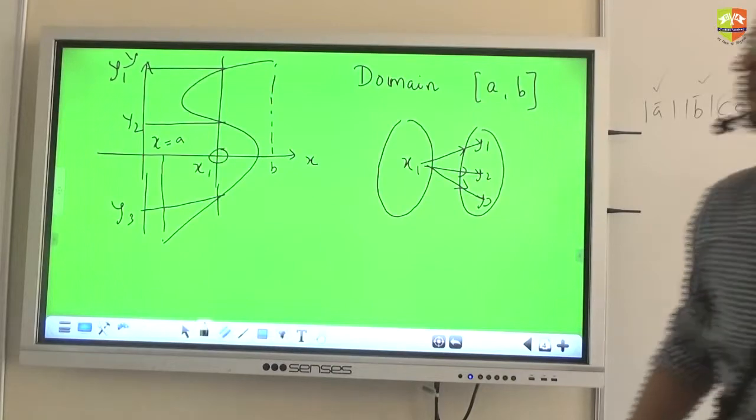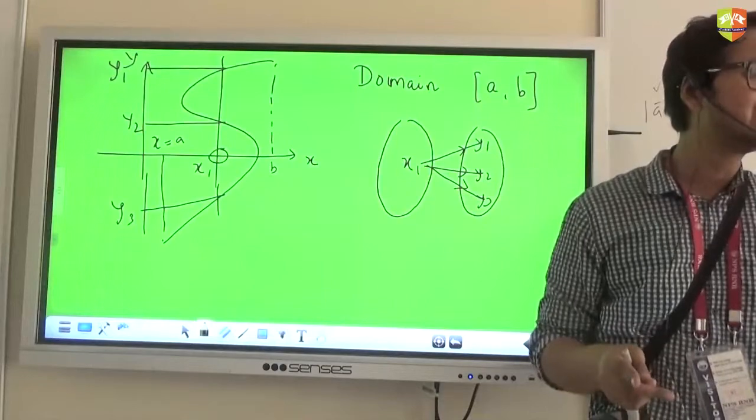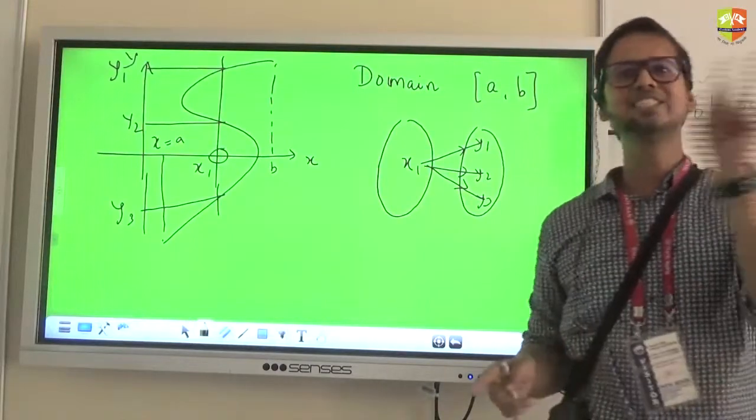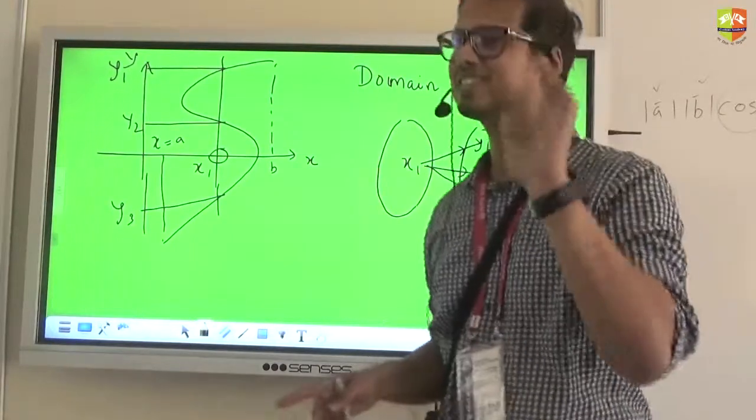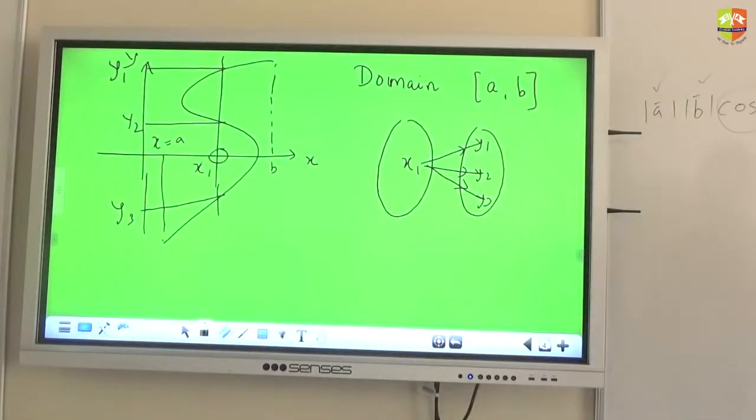So this will not be a function anymore. And therefore, this graph cannot be a graph of a function. Yes, it is a graph of a relation, but that relation is not eligible to be called a function. Understood? So many such things we'll be learning in this particular course.